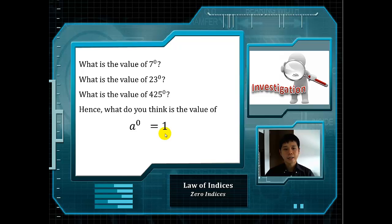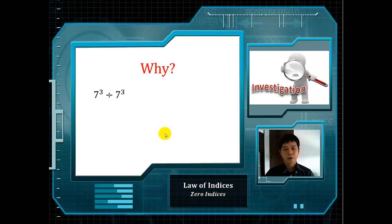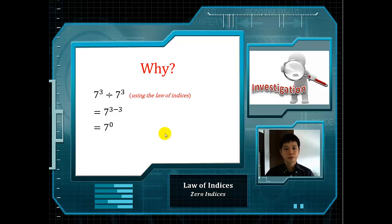You may ask: why is anything to the power of zero equal to 1? We will look at an example. Using the law of indices, 7 to the power of 3 divided by 7 to the power of 3 is equal to 7 to the power of 3 minus 3, which can be simplified as 7 to the power of 0.